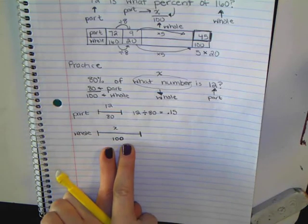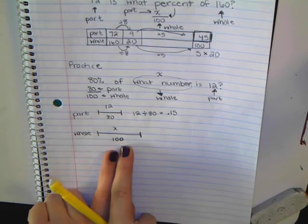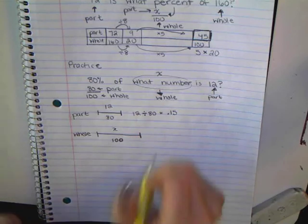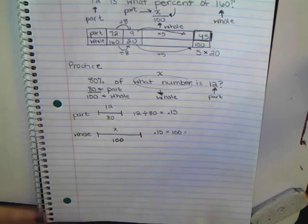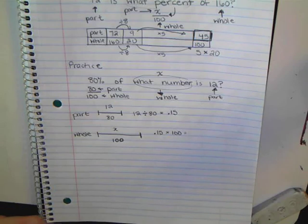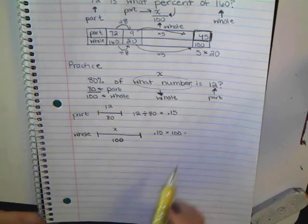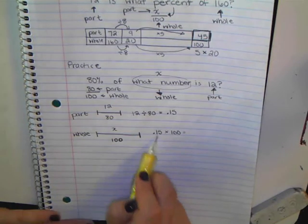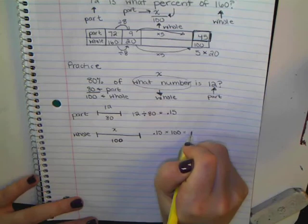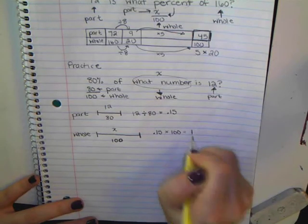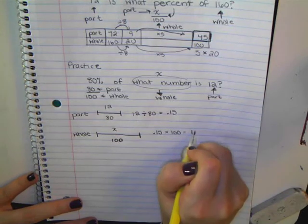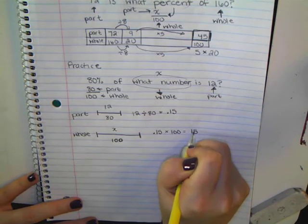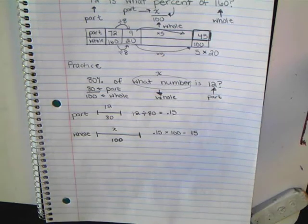How many do I have of them? 100. So how can I figure out what 100, 0.15 would be? What operation do I need to do? Multiply. So 0.15 times 100 equals? 15. 15. Okay. So I get 15.